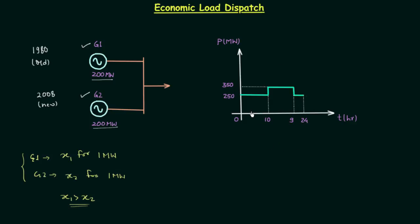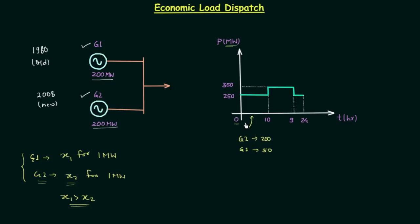In this case we have a daily load curve. From 0 to 10 hours, the power demand is 250 megawatt. We will try to produce 200 megawatt using generator G2 because it produces electricity at a cheaper rate and 200 megawatt is its maximum capacity. The remaining 50 megawatt demand will be satisfied using generator G1. So from 0 to 10 hours, G2 produces 200 megawatt and G1 produces 50 megawatt.